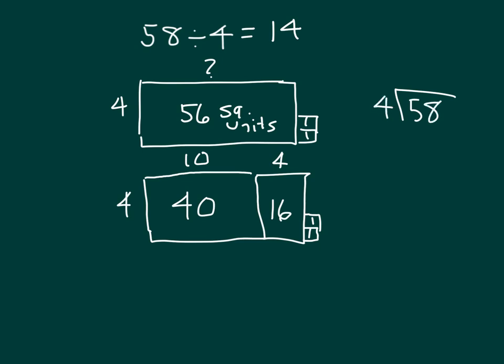Showing our division work and our long division to support our work here, 4 goes into 5 how many whole times? Right, once, because 1 times 4 is 4, and 5 minus 4 is 1. We bring down the 8. 18 divided by 4 is 4, because 4 times 4 is 16, and 18 minus 16 is 2. Make sure to record your remainder, not only in the long division, but also within your area model. Read that whole equation with me. 58 divided by 4 is equal to 14 remainder 2.